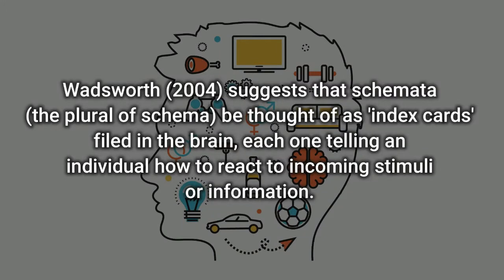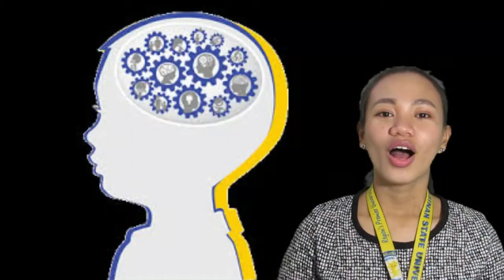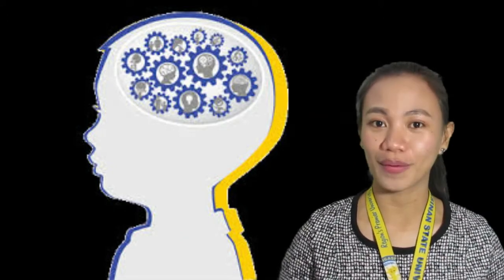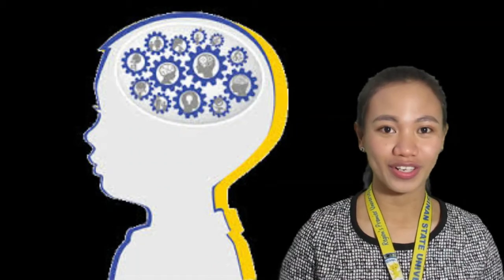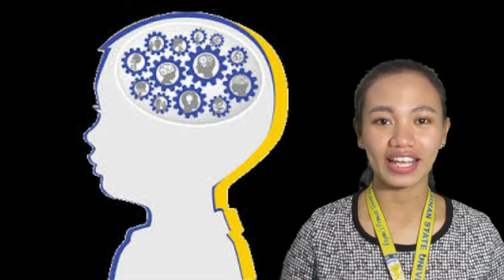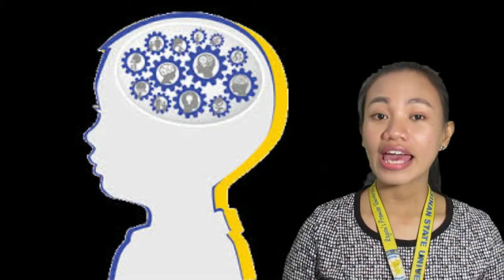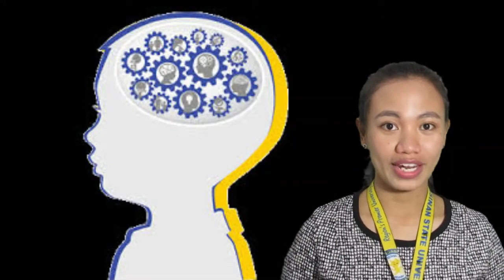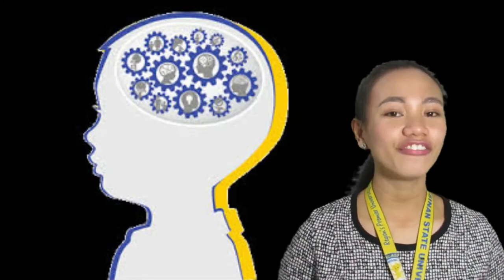Wadsworth suggests that schemata, the plural of schema, be thought of as index cards filed in the brain, each one telling an individual how to react to incoming stimuli or information. When Piaget talked about the development of a person's mental processes, he was referring to increases in the number and complexity of the schemata that the person had learned. When a child's existing schemas are capable of explaining what it can perceive around it, it is said to be in a state of equilibrium — a state of cognitive balance.